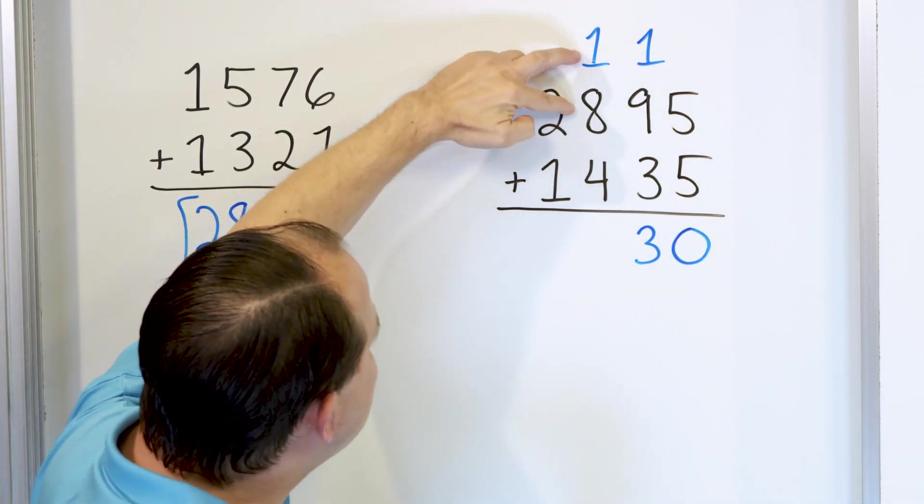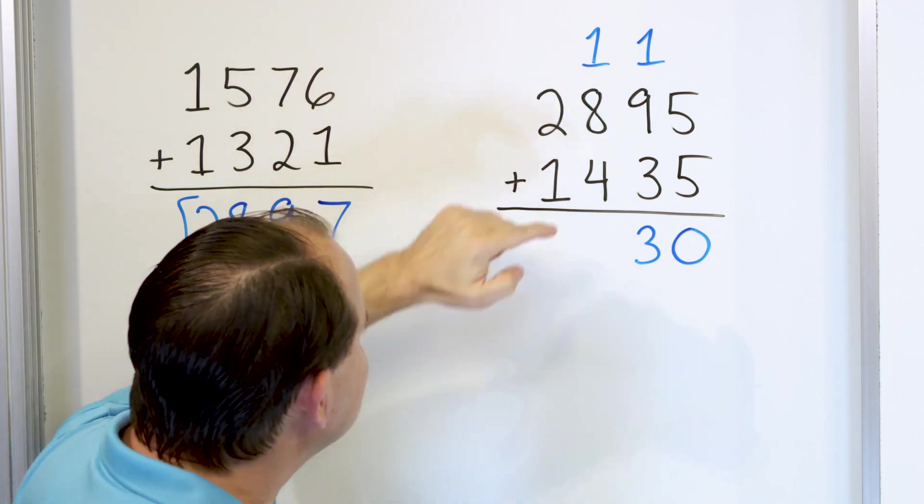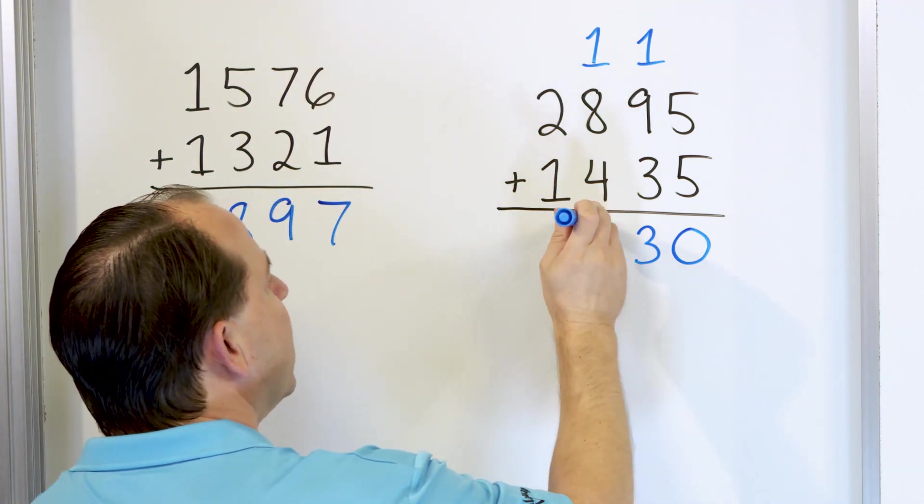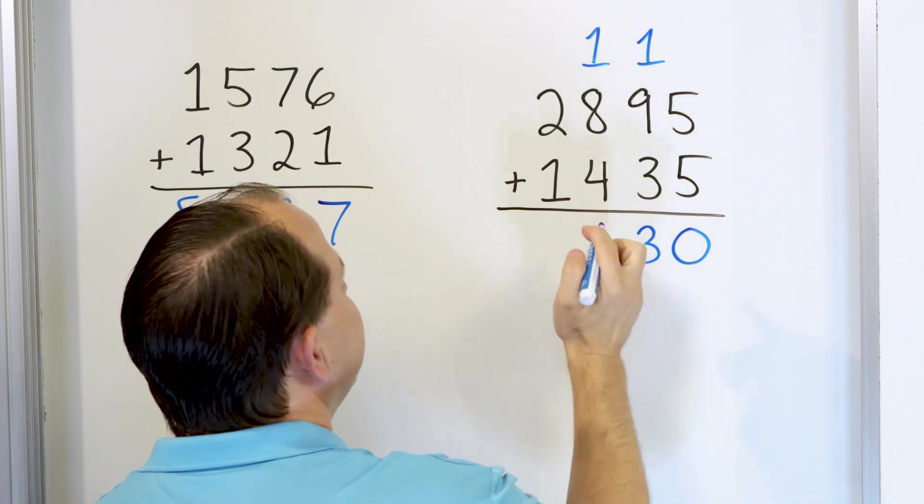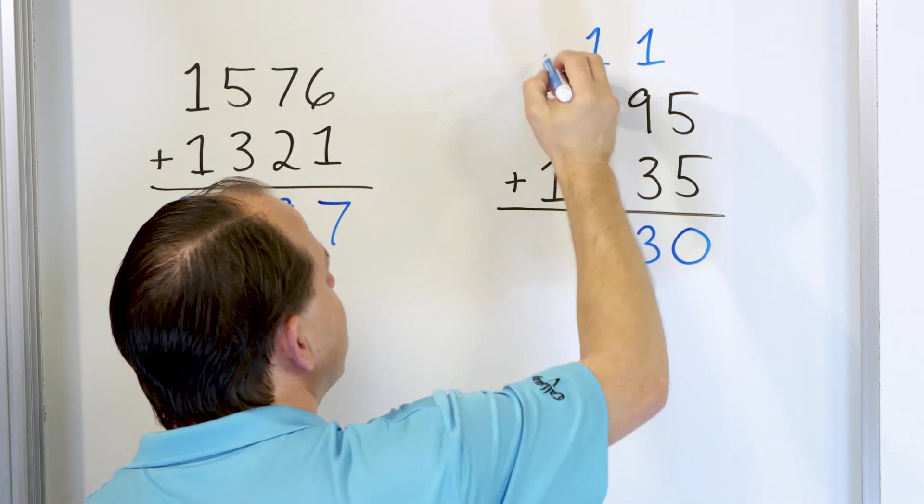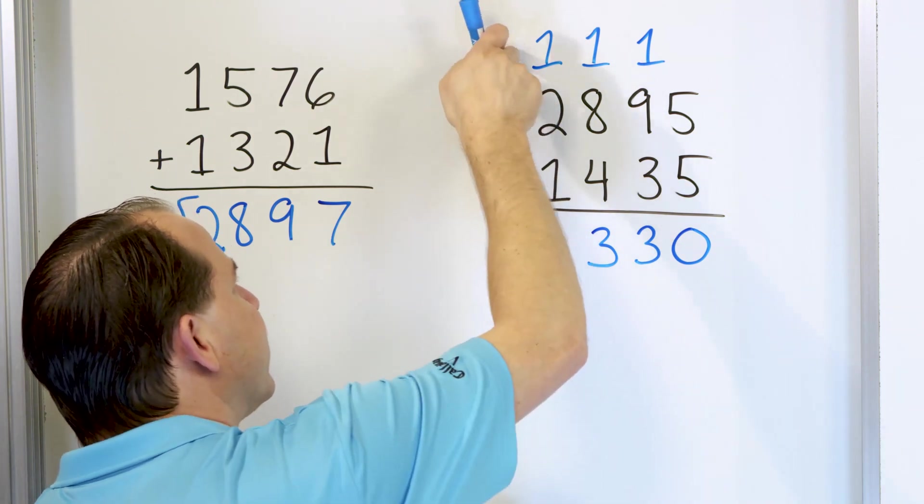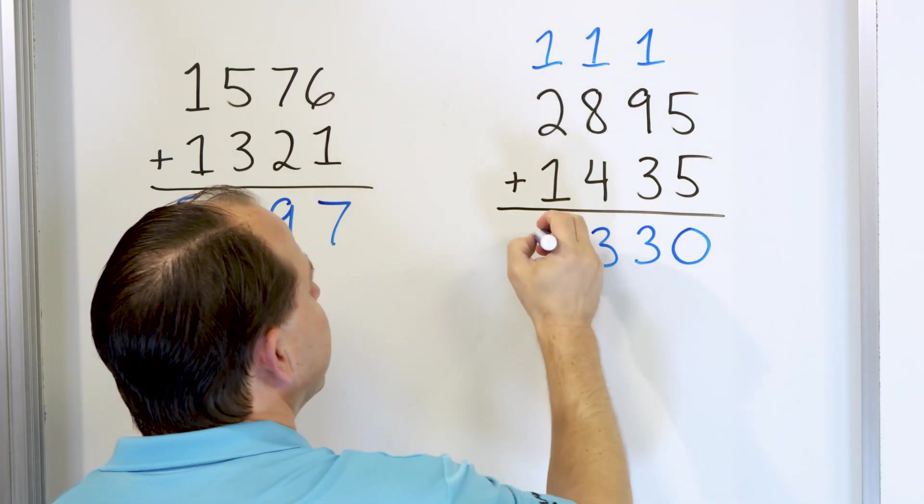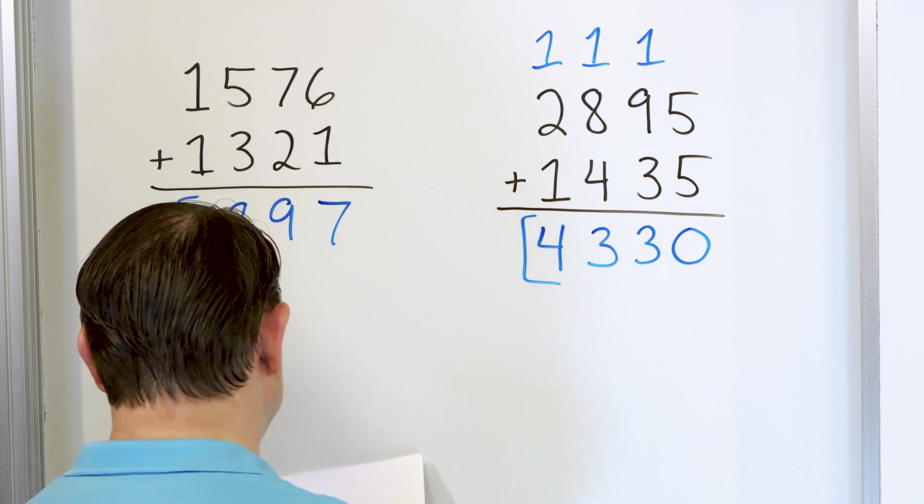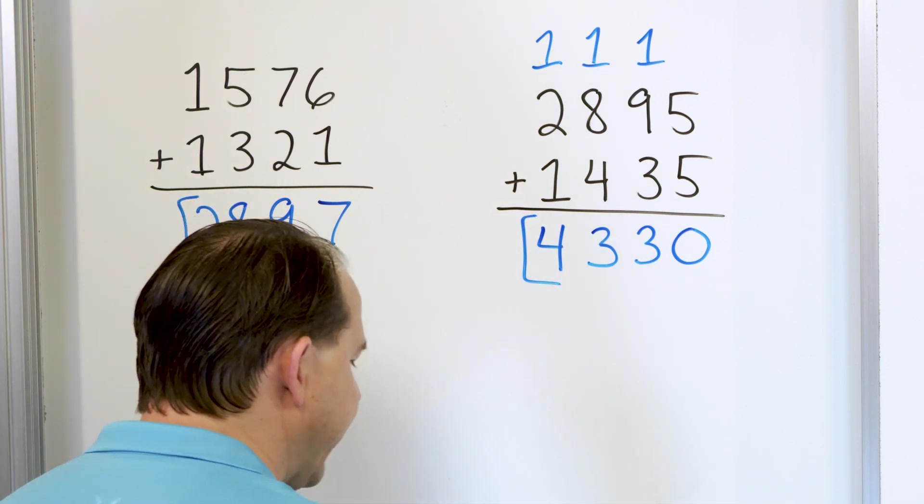And so 13, again, we have to put a 3, and we have to carry a 1. So here we have 9. 8 plus 1 is 9. And then let's count up 10, 11, 12, 13. So again, 13 is a two-digit number. So we'll put a 3. We'll carry a 1 up here. And then we have 2, and then 3, and then 4. And so 4 goes in the first column right here. And the answer is 4,330.